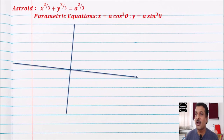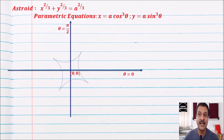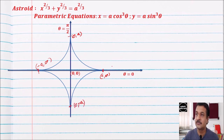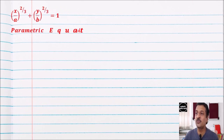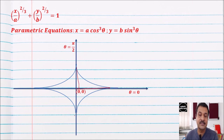Now the parametric curves. The asteroid is x^(2/3) + y^(2/3) = a^(2/3). Converting to parametric equations: x = a cos³θ, y = a sin³θ. Key points are (a, 0), (0, a), (−a, 0), and (0, −a). A similar curve is (x/a)^(2/3) + (y/b)^(2/3) = 1, with parametric equations x = a cos³θ, y = b sin³θ. Here a ≠ b, so the distances differ, with points at (a, 0) and (0, b).